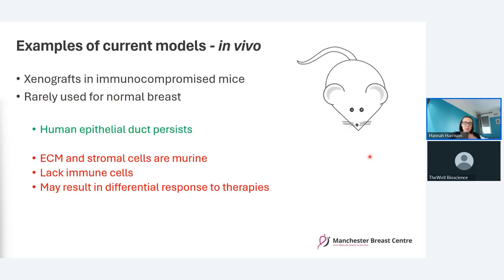In vivo modeling is really complicated, and with normal breast very little is done in vivo. Most in vivo xenografting models are cancer-based, but when it is done, lovely human epithelial ducts can persist — maintaining that structural bilayer. However, following implantation, the stromal cells and extracellular matrix of the mouse quickly take over. These models also have no immune system, and we know that immune cells are vital in cancer development and in response to treatments. It's really important to get the human stroma, extracellular matrix, and human immune cells back into play.